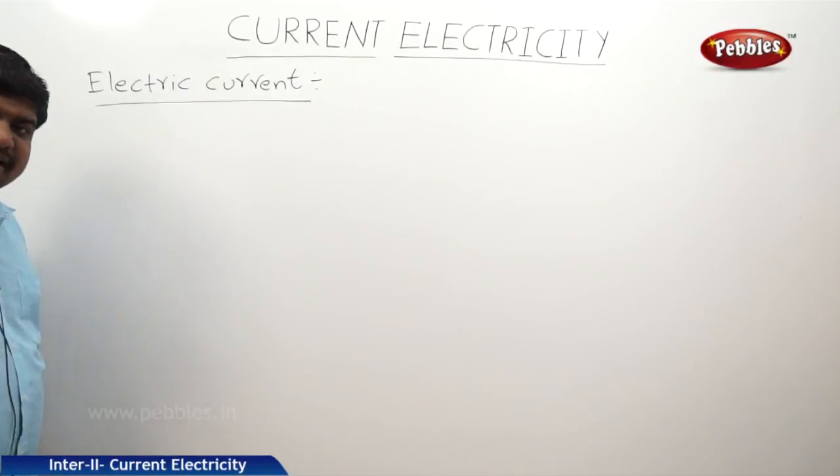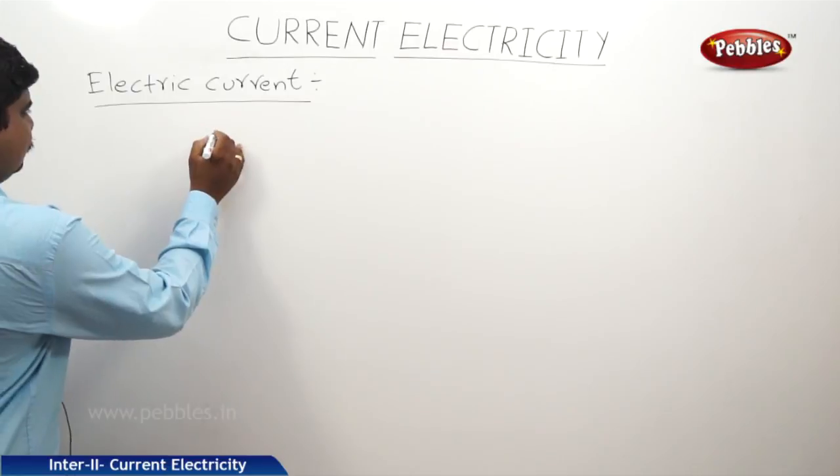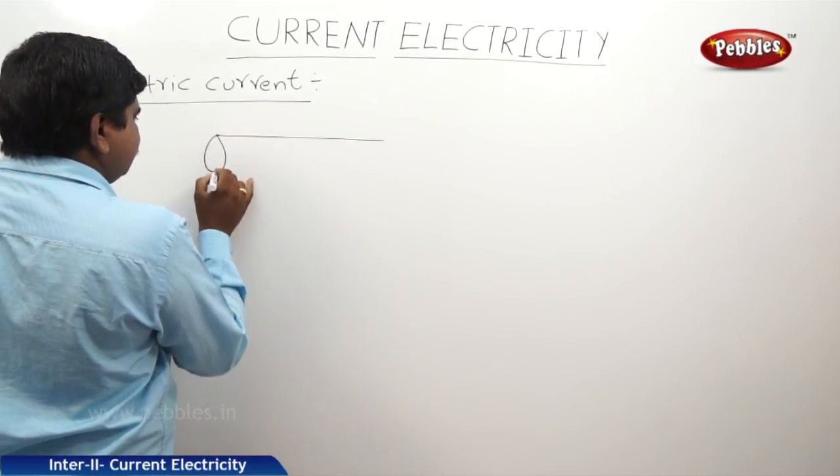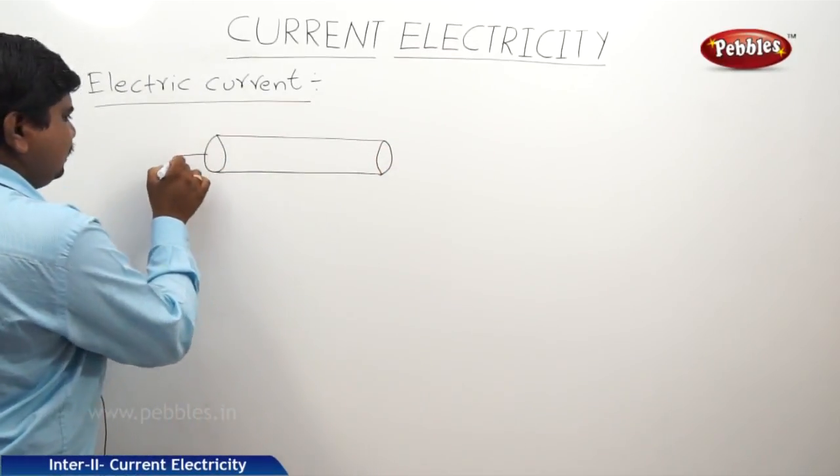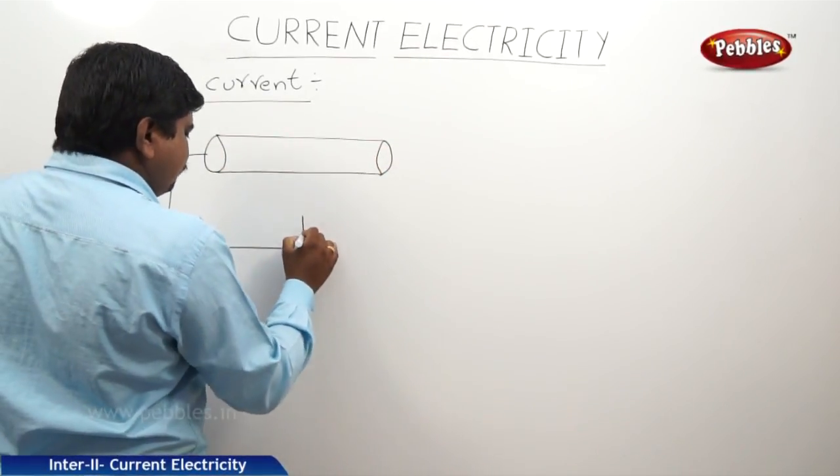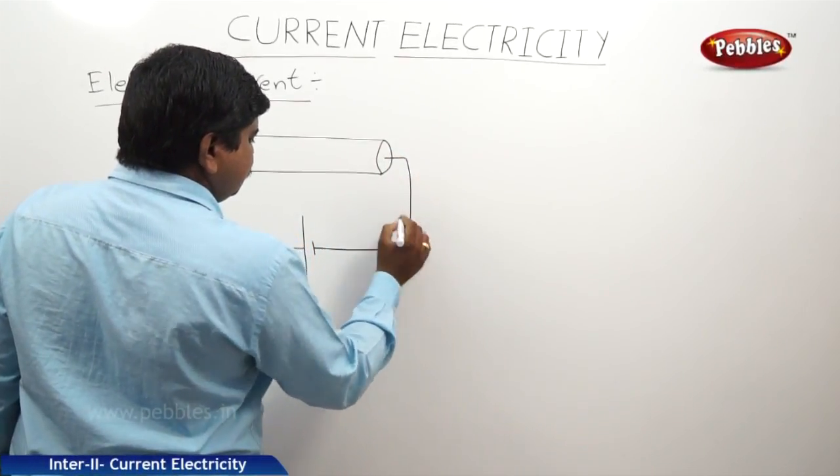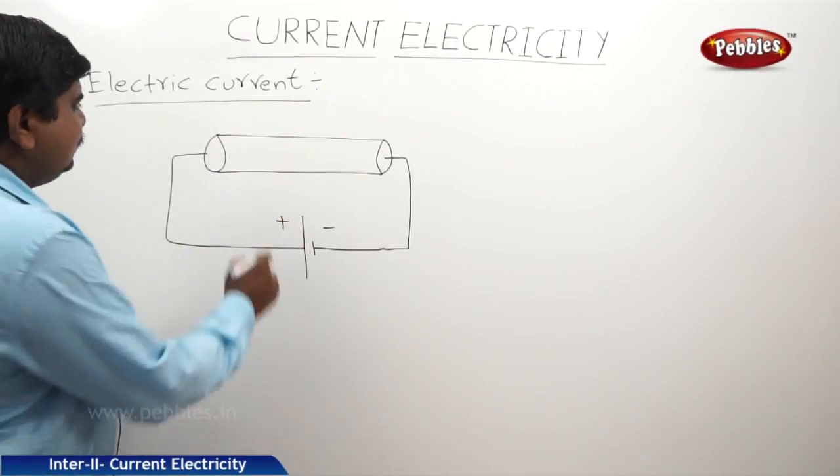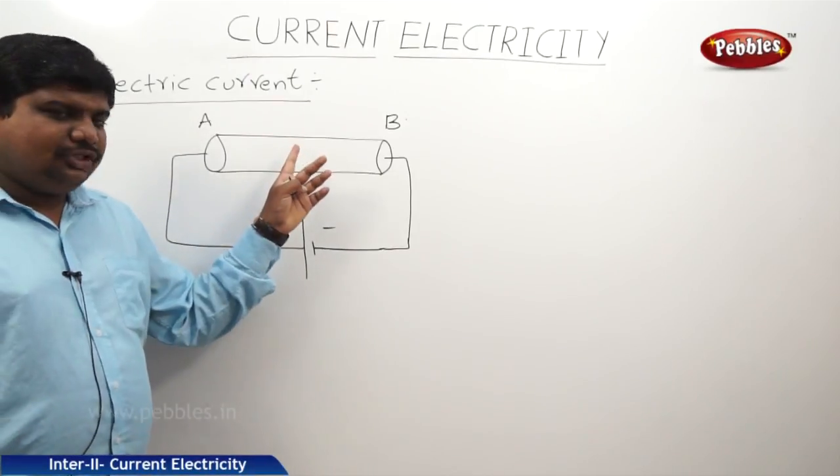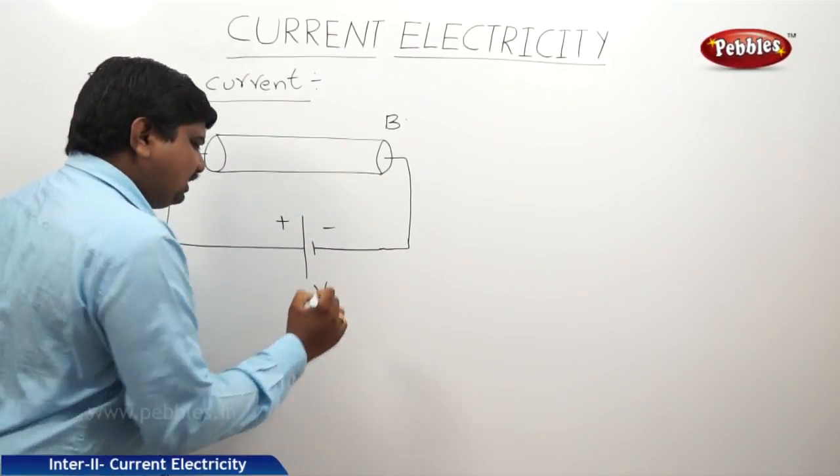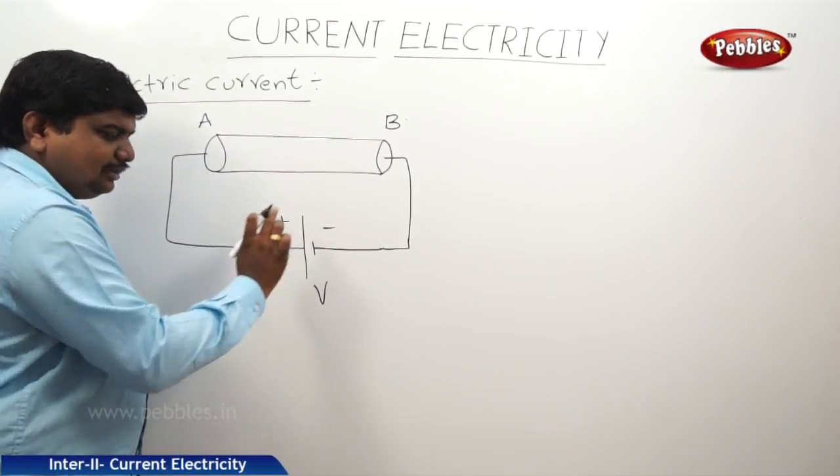The next concept is electric current, Vidyut Pravaham. Take a conductor, this conductor is connected to a battery, positive potential, negative potential across the ends, AB. AB has potential connected to a battery. It is a positive symbol, it is a negative symbol.